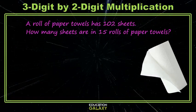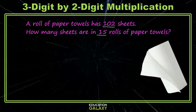Okay, here we have a roll of paper towels. It has 102 sheets, and we want to know the total number of sheets in 15 rolls. So this is multiplication. We have 102 times 15.